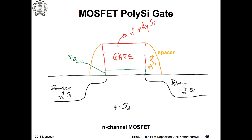This is talking about a technology option where you want to dope the polysilicon to a fairly high concentration. When I make a MOSFET, this is my gate — let us say this is polysilicon — and this is my dielectric, this is the spacer, and these are the source and drain regions. Source and drain.